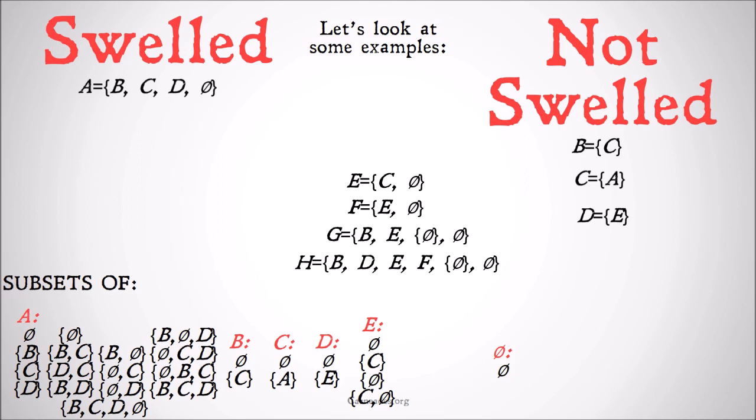Let's keep looking. E contains as its members C and the null set. The subsets of C are the null set and the set only including A, which is identical to C. E contains both the null set and the set which only includes A — also identical to C. So E is swelled.